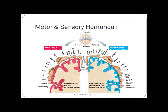The sensory homunculus shows that the tongue, mouth, face, and hand have a ton of sensation, while the back of the head, body, and arm have less. The size of the area on the homunculus represents how many nerves — and thus how much control or sensation — that region has.